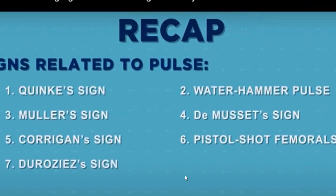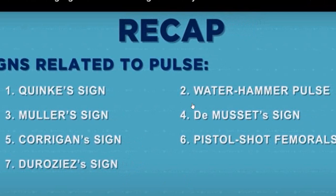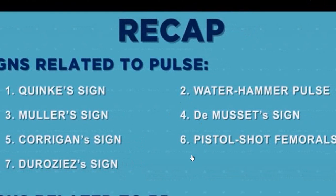Quincke's sign, Muller sign, Corrigan sign, Duroziez's sign, water hammer pulse, De Musset sign, pistol shot femoral, as well as Hill's sign — these are the main peripheral signs of aortic regurgitation.